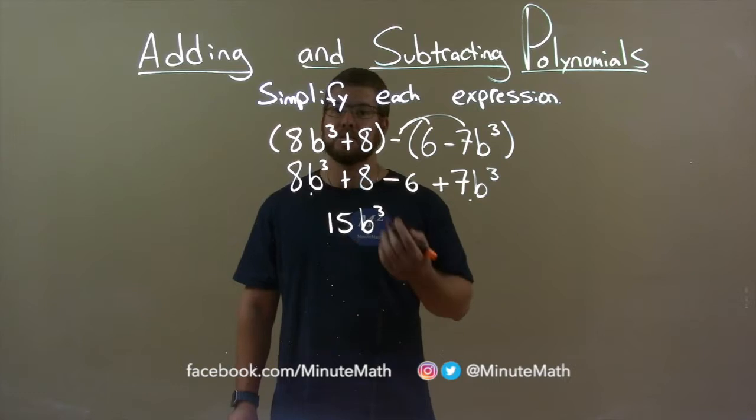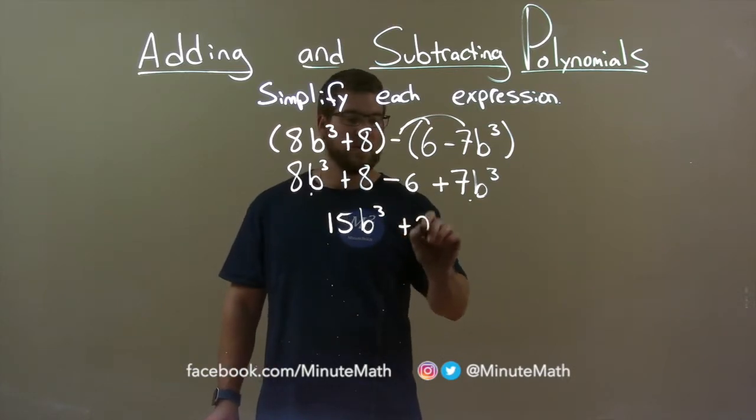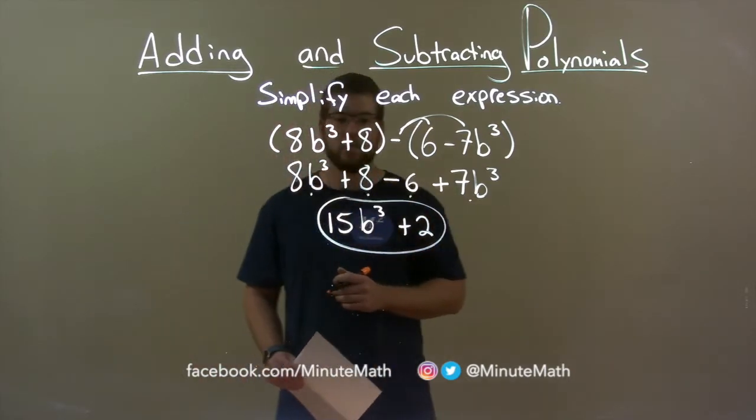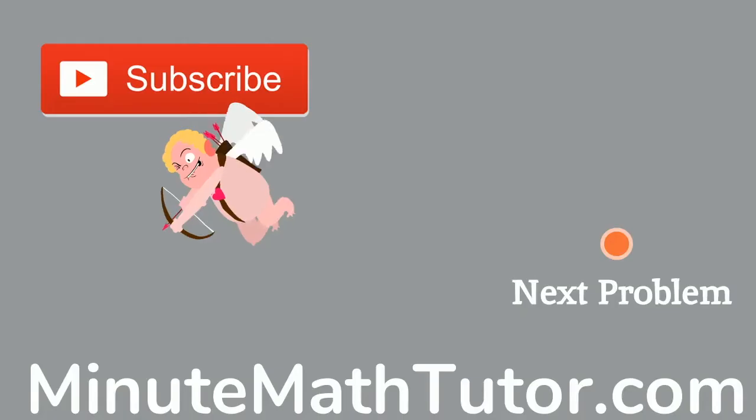8 minus 6 is 2, so we have a plus 2 here, and now we've brought everything down. So our final answer: 15b to the third power plus 2.